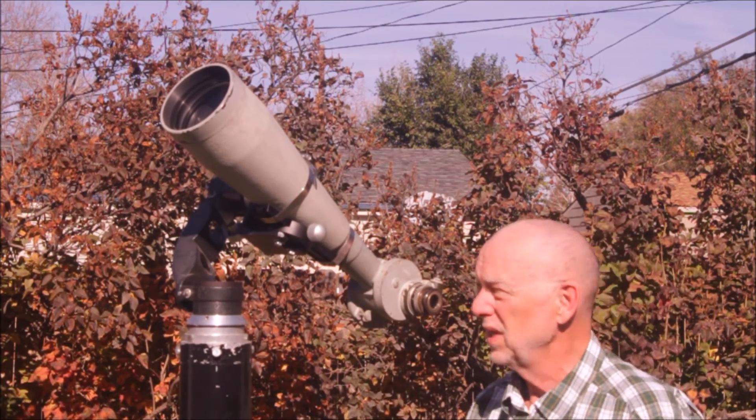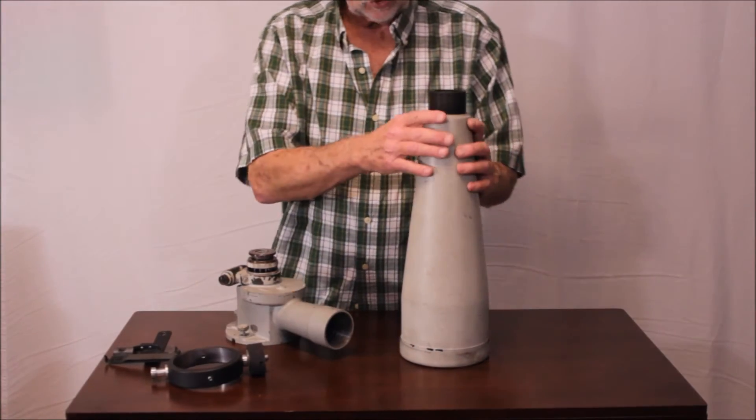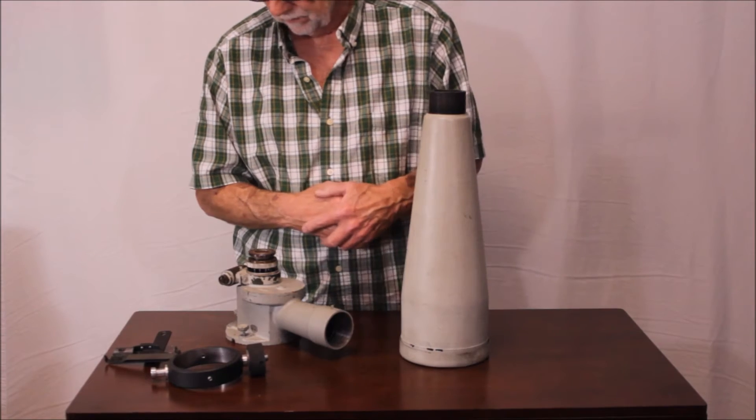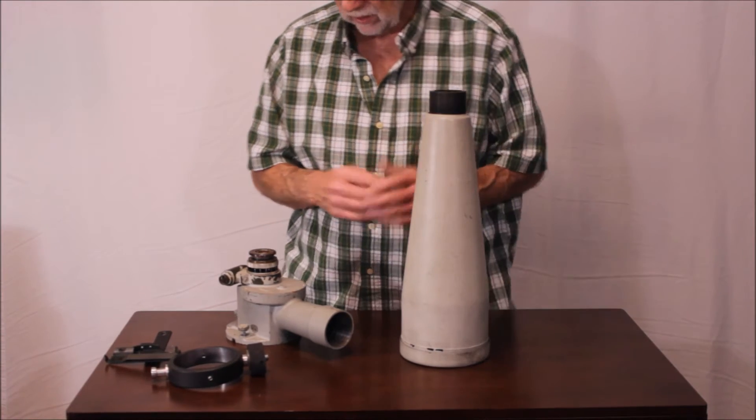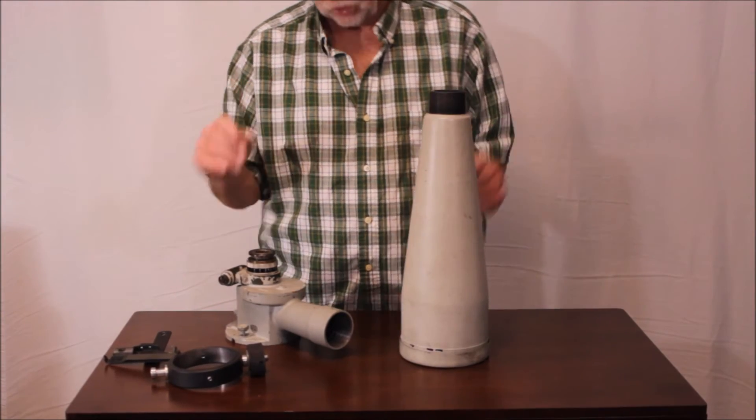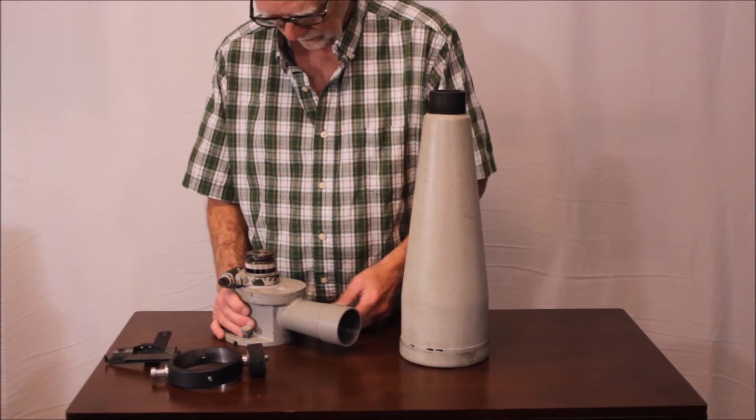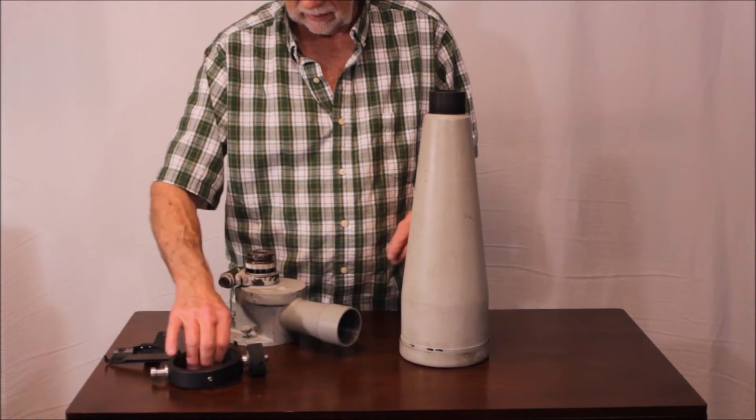I believe that's the way they operated these things. One of the things I did with this scope when I got it was to try it on a sort of a temporary mount, and then I decided it's a pretty nice little scope if you could use it in some sort of an alt-azimuth configuration, for maybe a comet finder Richfield kind of telescope. So I divided it and I pulled it apart.